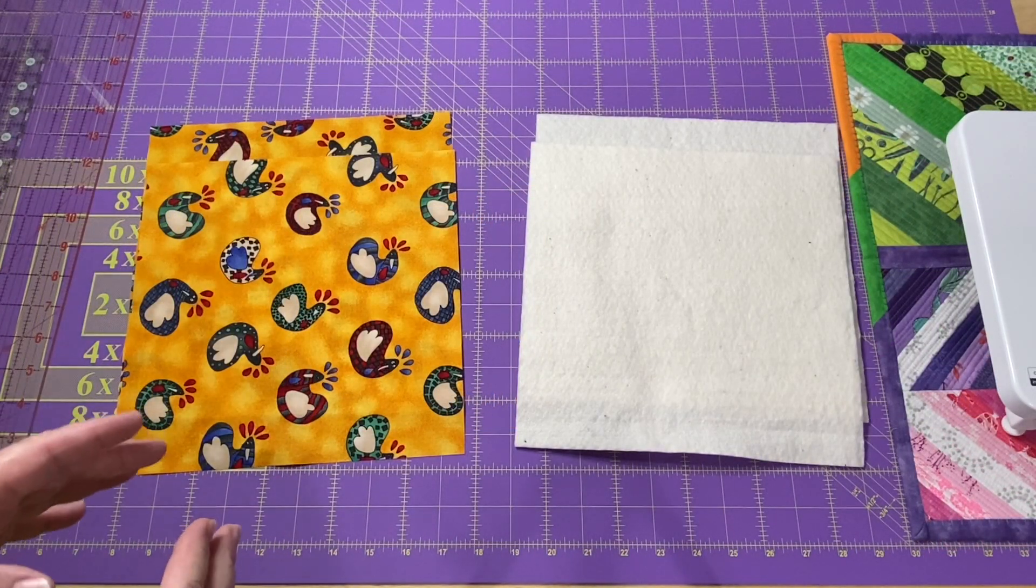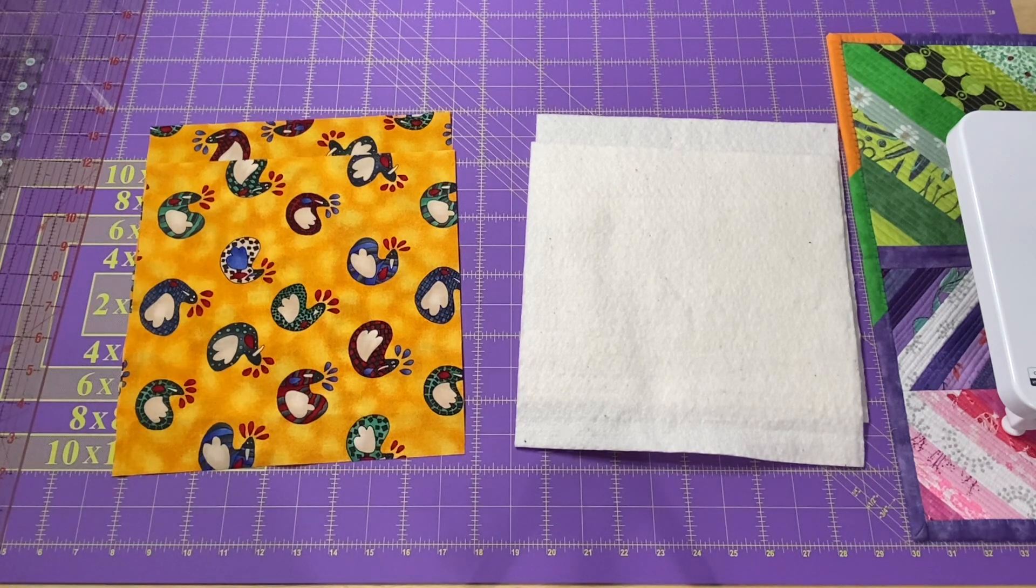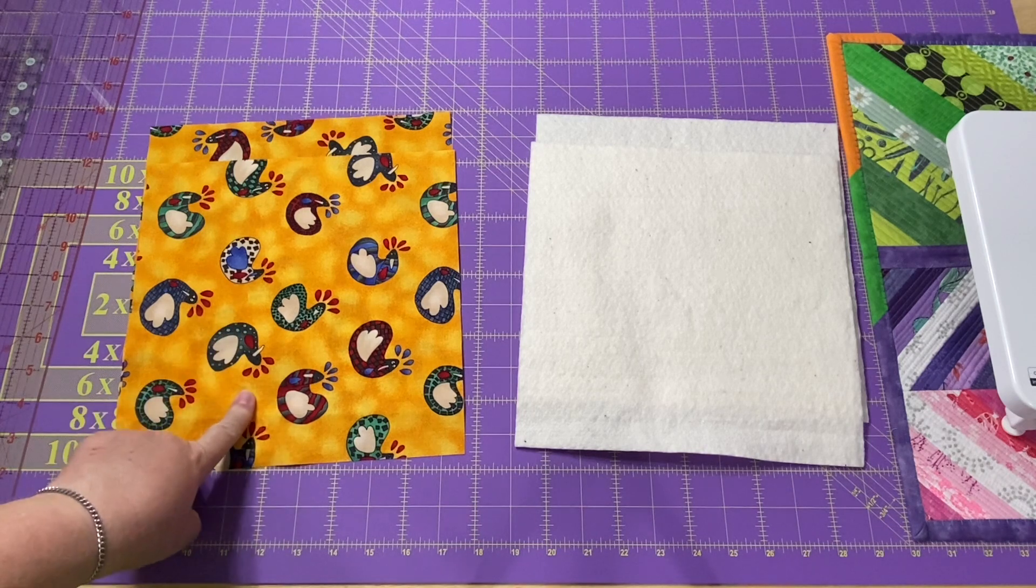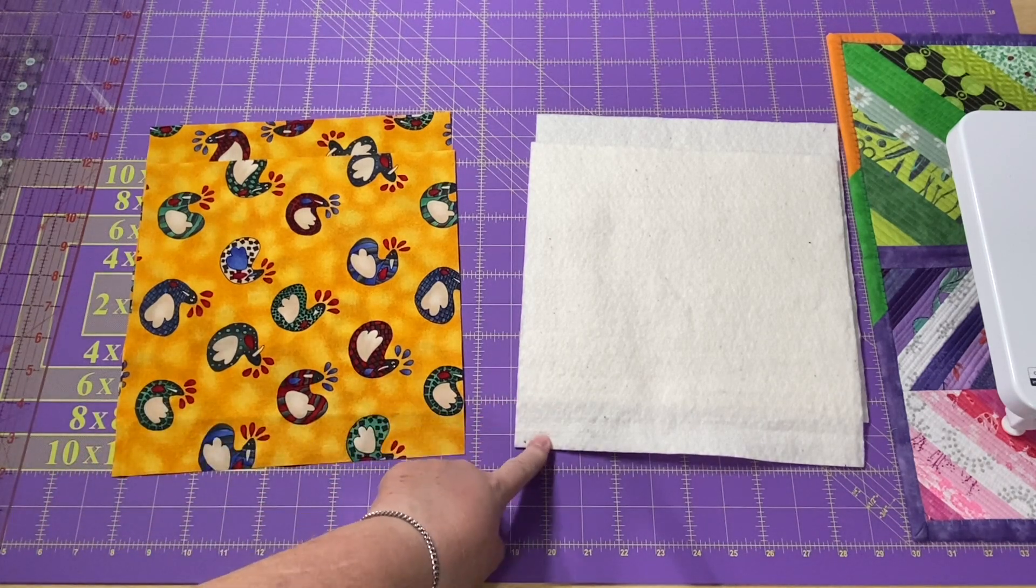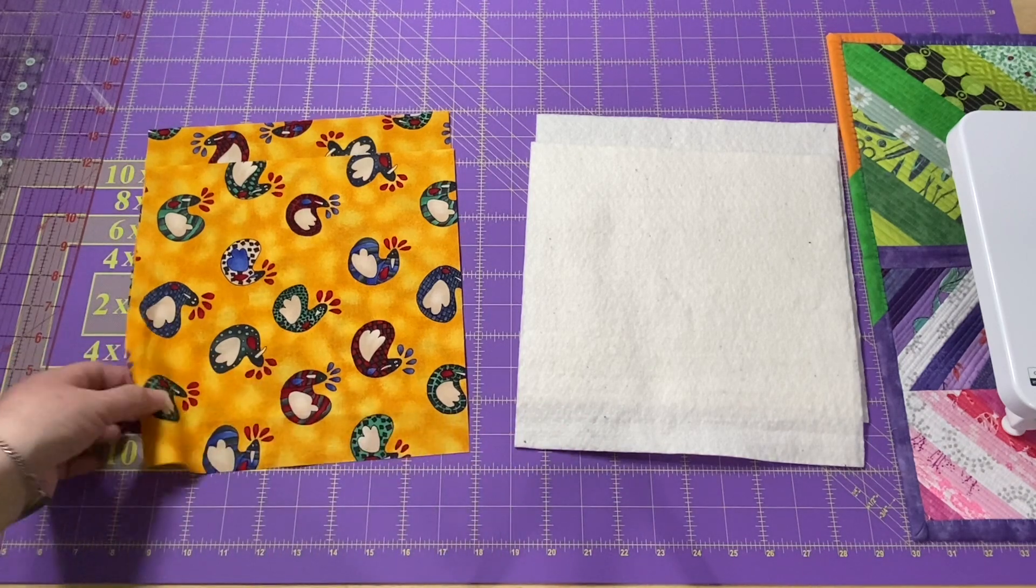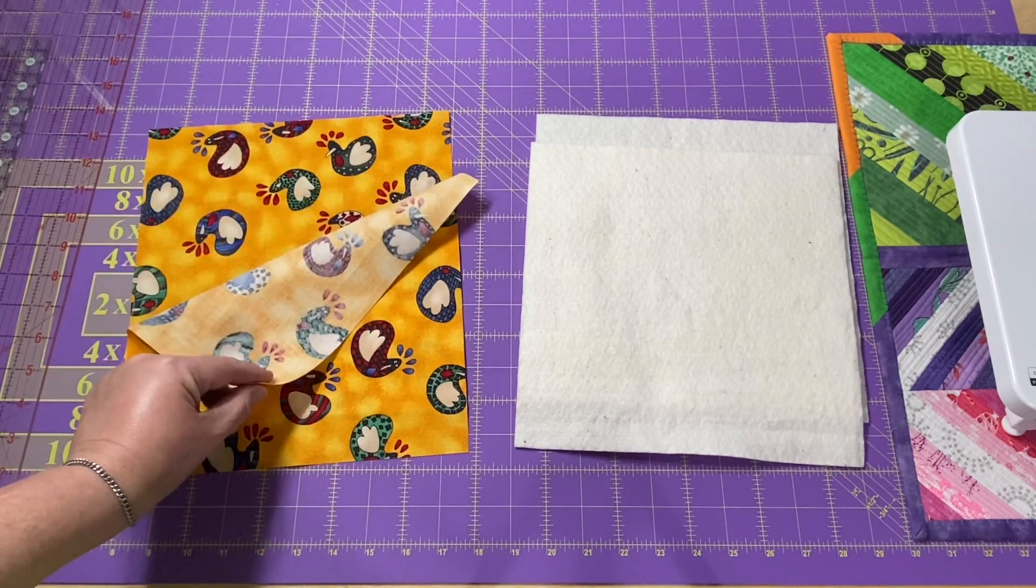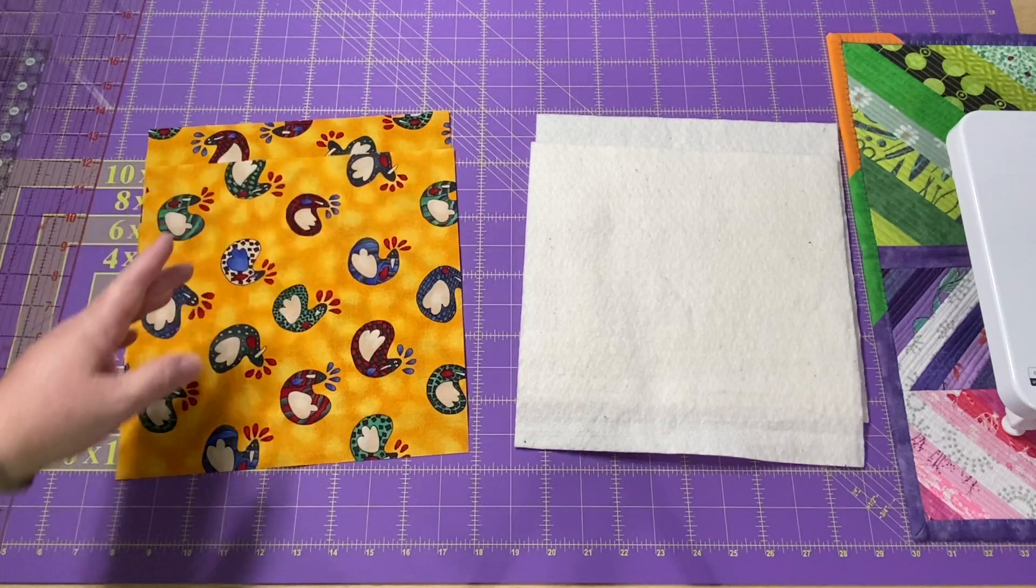Our supplies for this project are very simple, but very specific. We are going to need our sewing thread, two pieces of cotton fabric cut at 10 inches, and two pieces of cotton batting cut at 10 inches. Now I'm using two pieces of the same fabric, but you can use two different fabrics if you choose.